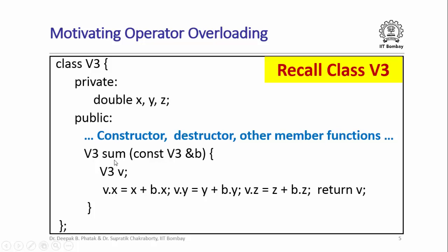For now I am concerned with the member function sum. This takes as parameter another object of class V3. The const keyword denotes that this object is not going to be modified within this member function. Inside, it allocates a new object V of class V3 and sets the X, Y, and Z data members to the sums of the corresponding coordinates of the receiver object and the parameter object, then returns V. Basically, it computes the vector sum of the receiver object with the parameter object.